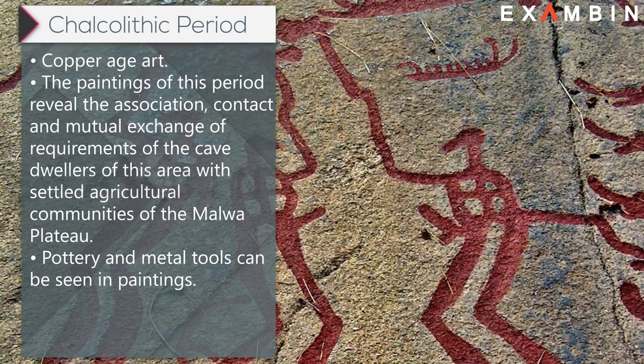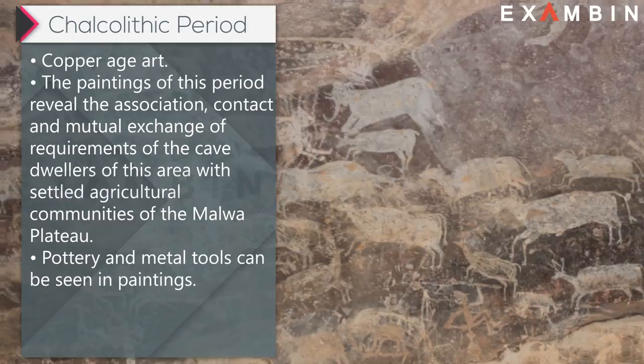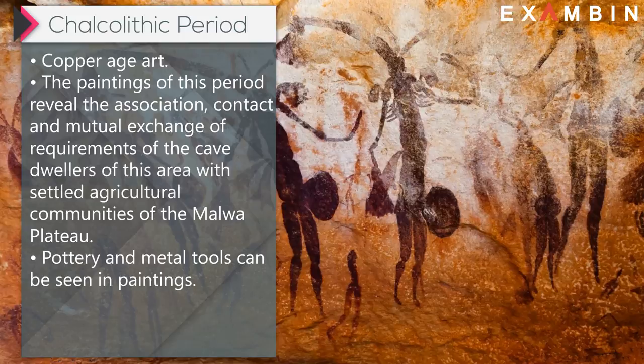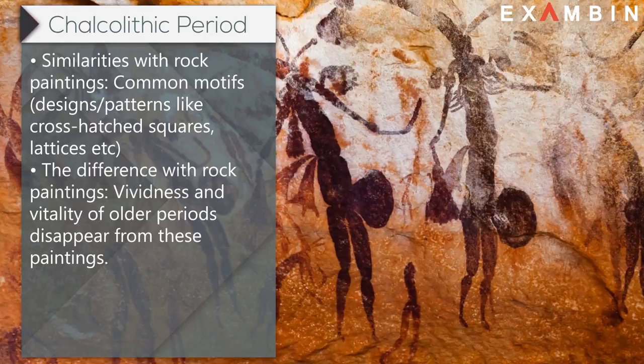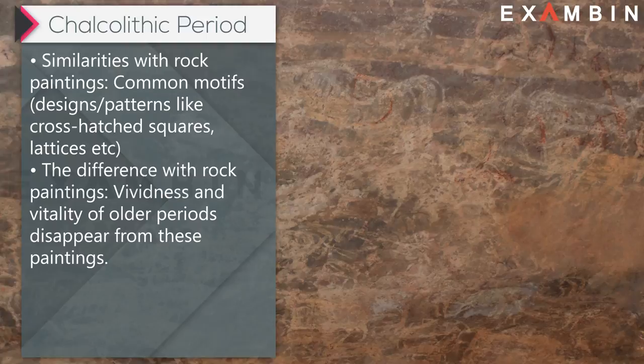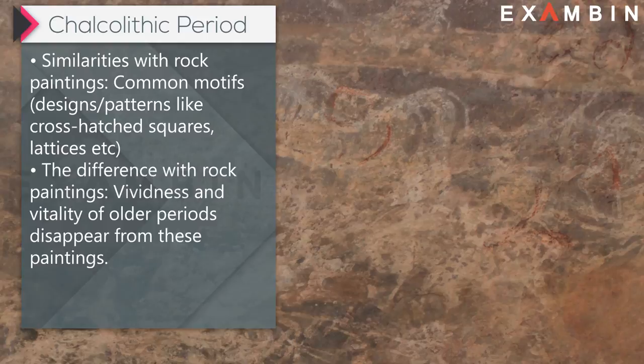Chalcolithic period art is copper age art. The paintings of this period reveal the association, contact, and mutual exchange of requirements of the cave-dwellers of this area with settled agricultural communities of the Malwa Plateau. Pottery and metal tools can be seen in paintings. Similarities with rock paintings include common motifs — designs and patterns like grass-hatched squares, lattices, etc. Differences include the fact that the vividness and vitality of older periods disappear from these paintings.